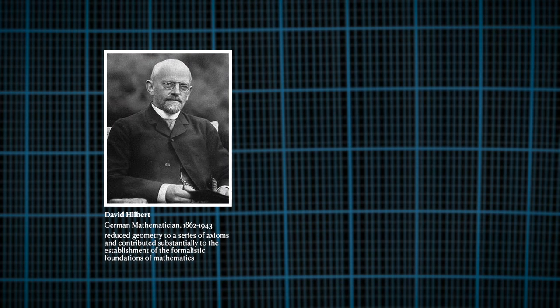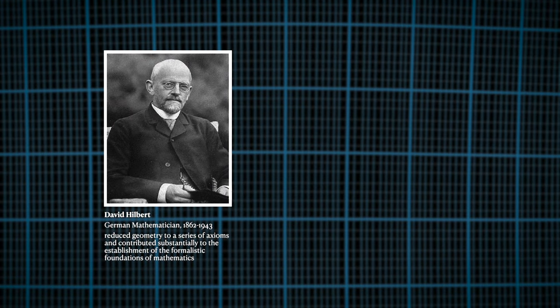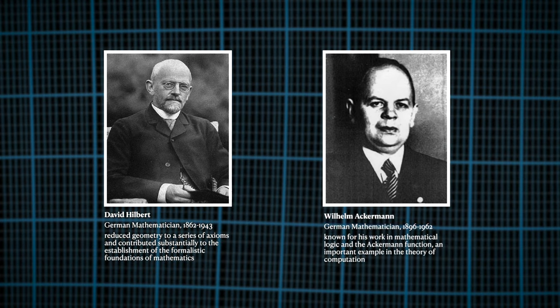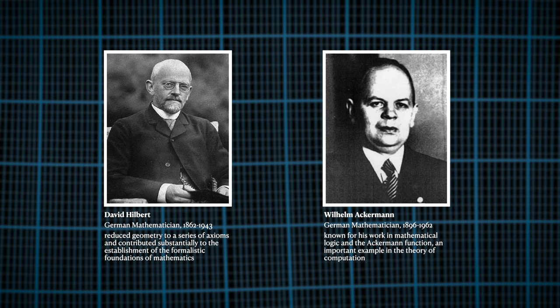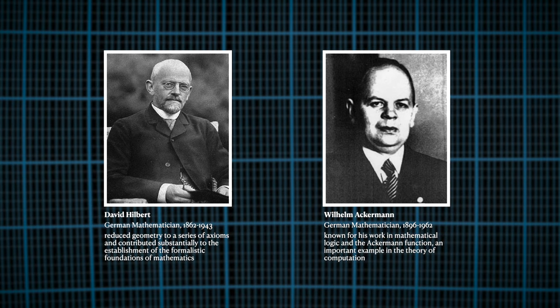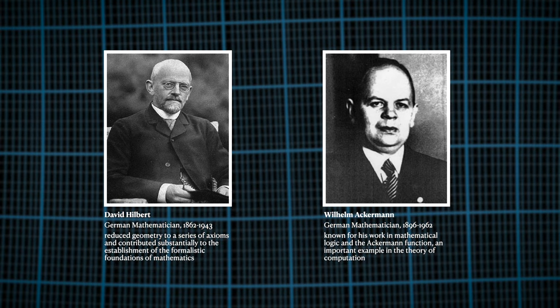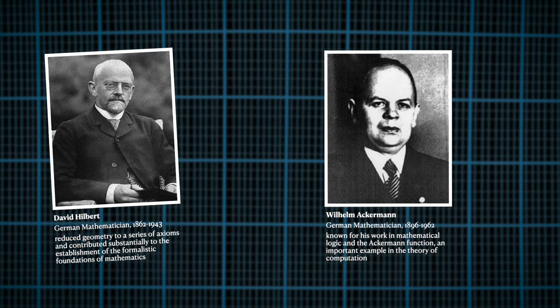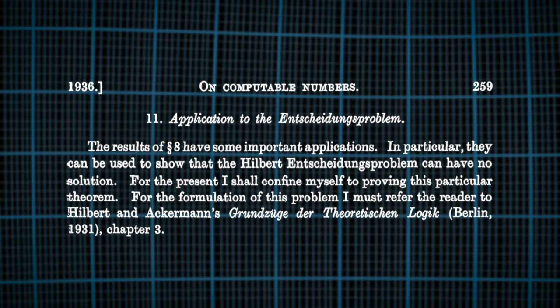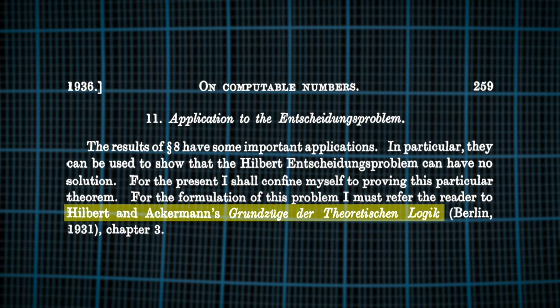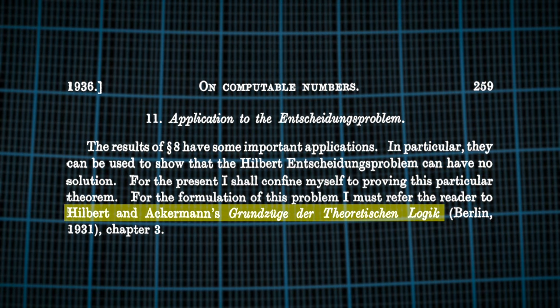Many great minds had attempted to solve the problem but had come up short, such as the man who posed the Entscheidungsproblem in 1928, David Hilbert, and the man who provided a proof for the insolvability of the Entscheidungsproblem for a specific formal system known as Ackermann's system in the same year, Wilhelm Ackermann. That proof was later used by Alan Turing in his paper.